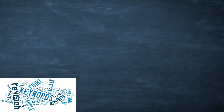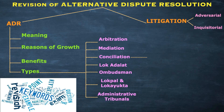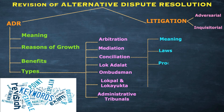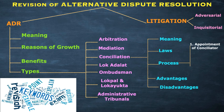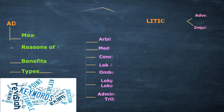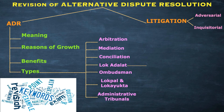Under conciliation, the major terminologies studied are: meaning and concept, laws, process of conciliation, advantages of conciliation, and disadvantages of conciliation. Under the process of conciliation, the steps are: first, appointment of conciliator; second, joint session; and third, agreement and settlement.